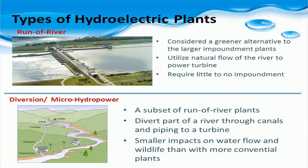Run of river plants utilize the flow of water within the natural range of the river and require little to no impoundment. Diversion plants are a subset of run of river plants that divert the flowing water through a canal into the turbine. While these plants lack the control provided by impoundment plants, they have a much smaller impact on the water flow.